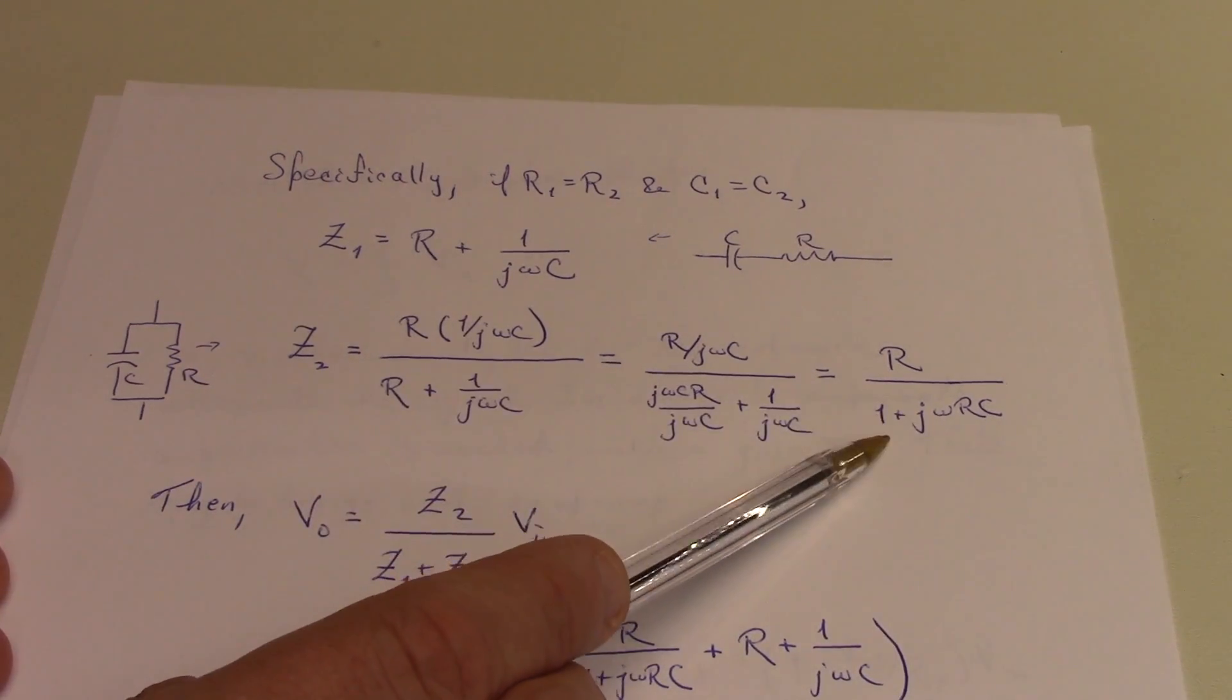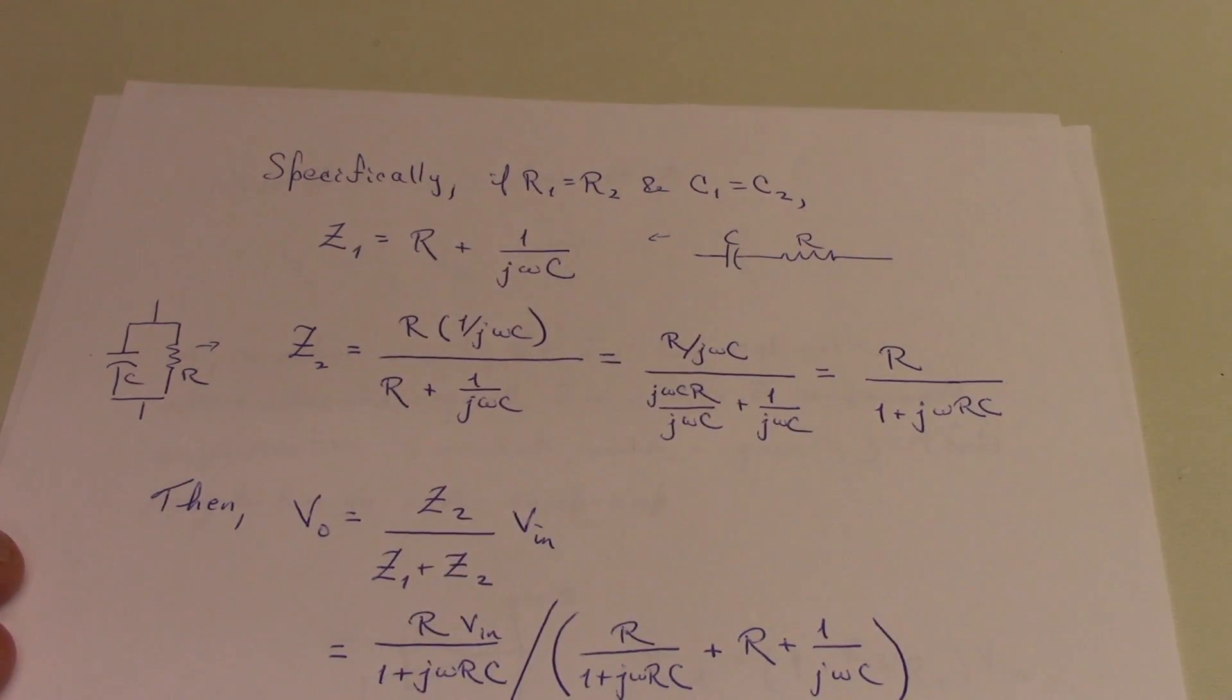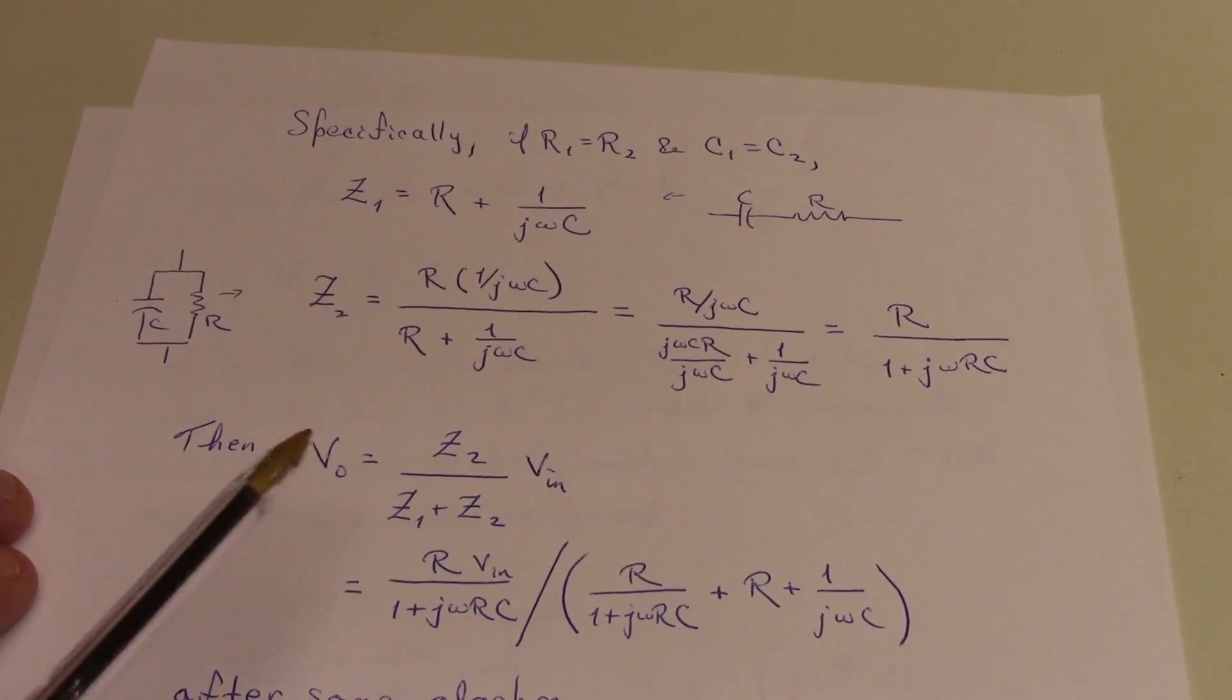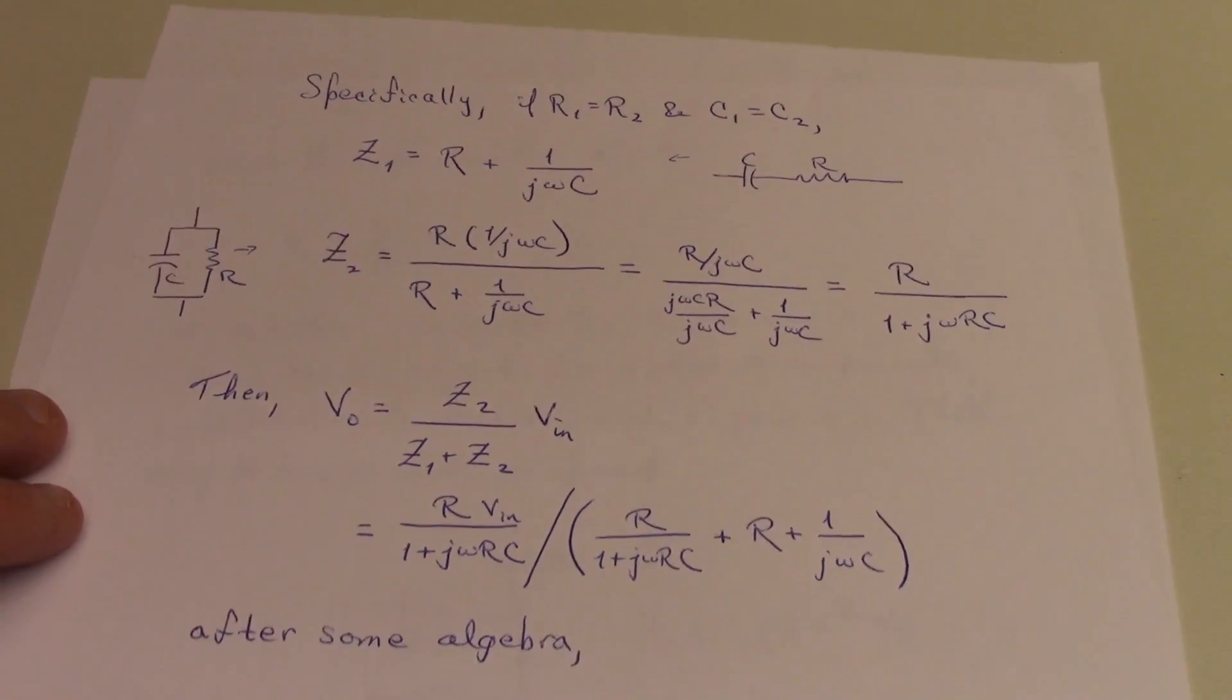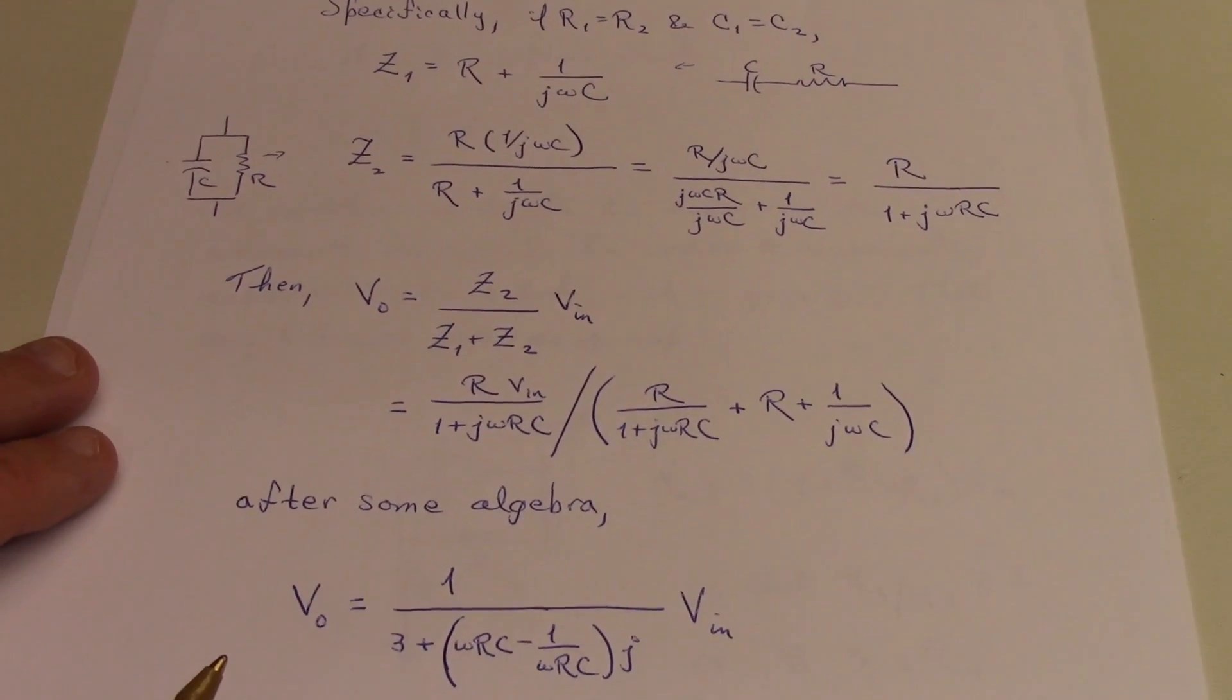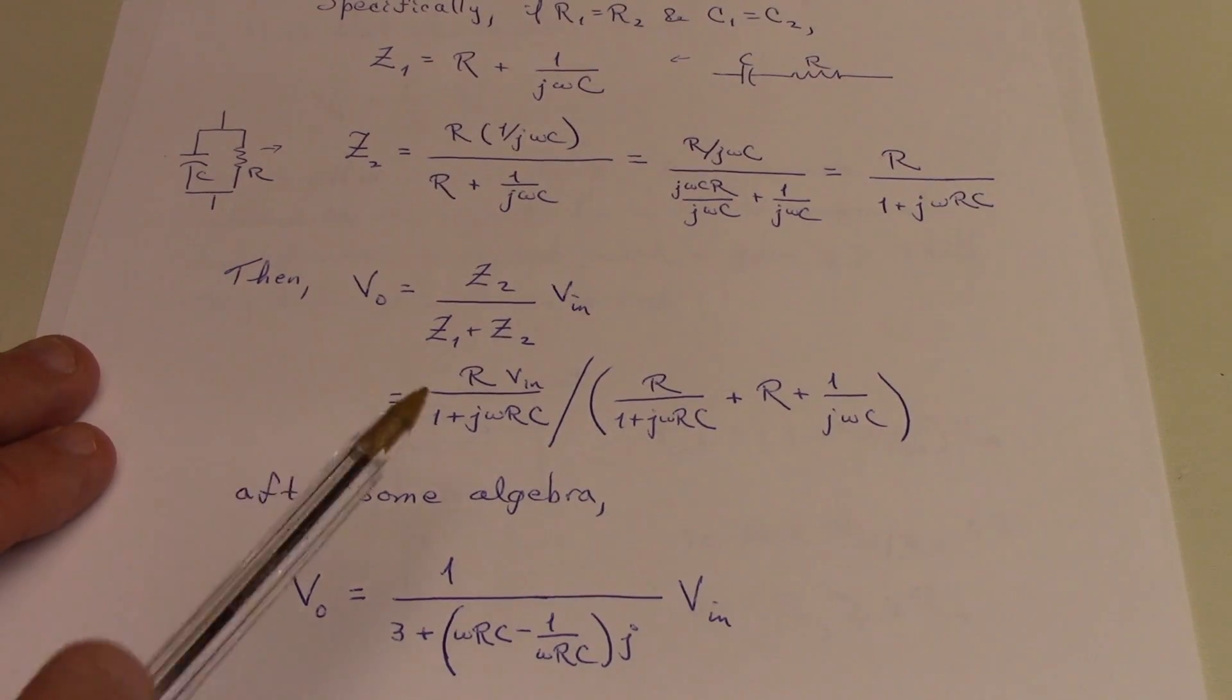That simplifies to this expression, and we then get to the point here that V naught is Z2 over Z1 plus Z2 times V in. I should probably call this V out instead of V naught.